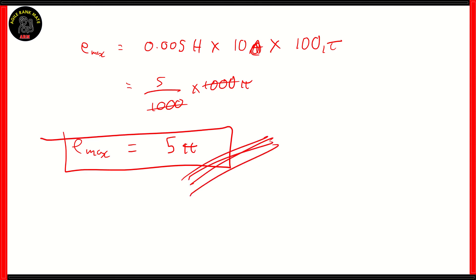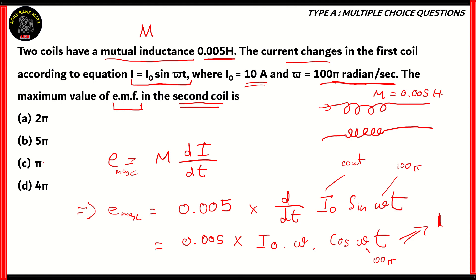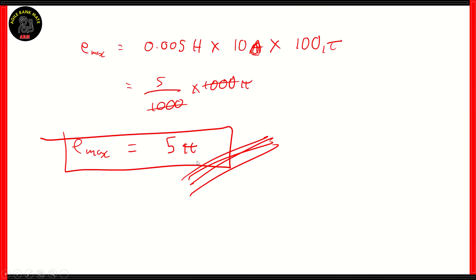EMax equals 5 pi is the correct answer for this question. If you look at the following options, it's clear that option B is the correct option. What we did was use the formula — maximum EMF equals mutual inductance times the derivative of current with respect to time. Then we did the derivation and equated cos omega t as 1, because omega has the value of pi, so cos of n times pi gives you 1. From there, all we had to do was multiply the inductance times I0 times omega to get the value of 5 pi, which is equal to option B.